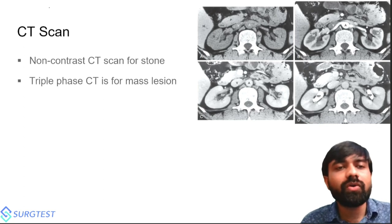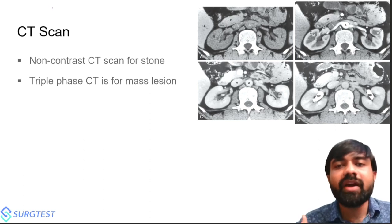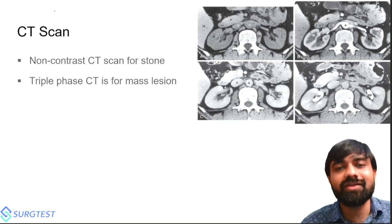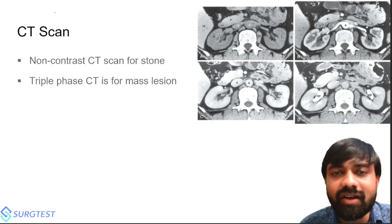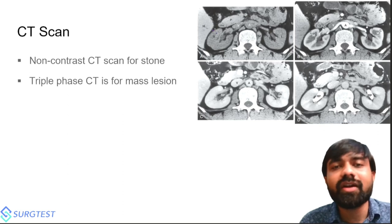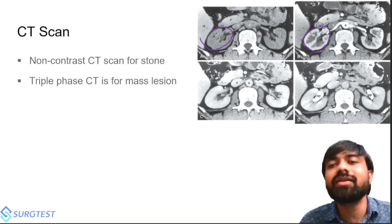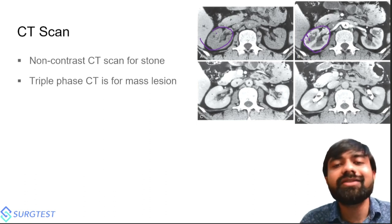Non-contrast CT scan is the investigation of choice for renal/ureteric stones. For mass lesions, triple-phase CT scan is used: Image A is pre-contrast (plain phase), Image B is the corticomedullary phase immediately after contrast injection — allowing delineation between cortex and medulla. These CT scan images can be directly asked in examinations.